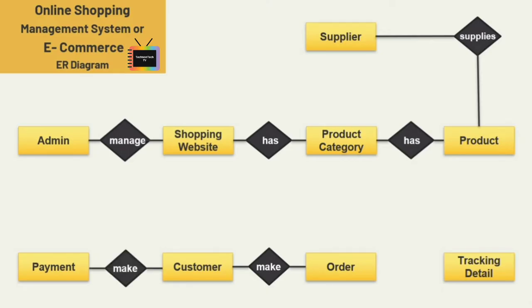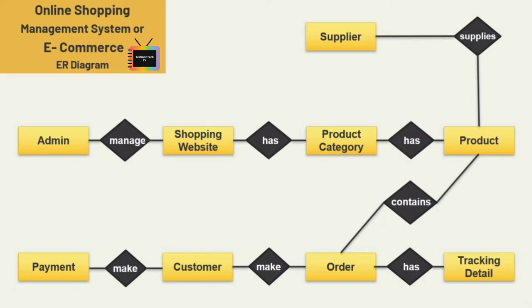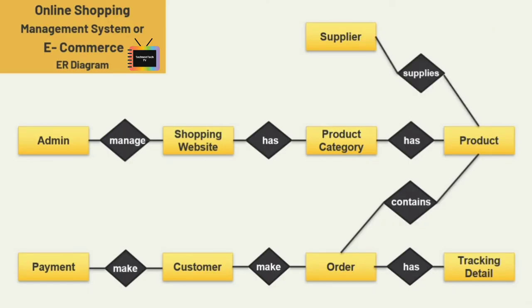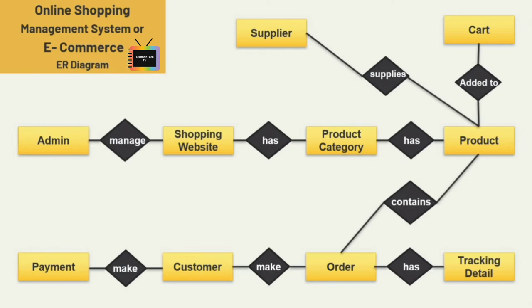After placing an order, the customer can also make a payment. An order contains different products, and the customer has tracking details from which they can track their order after placing it on the website. We can also add one more entity — the cart entity. Let's shift the supplier entity a little bit, and here I'm adding the entity cart with the relation 'add to,' so a customer adds products into the cart as well.